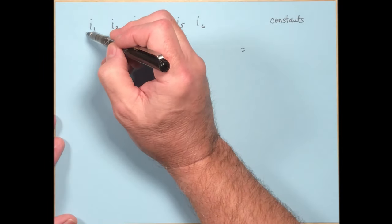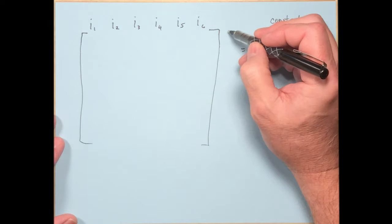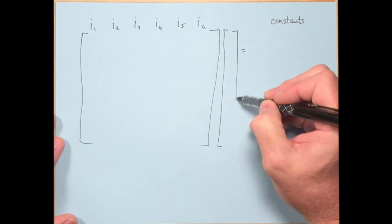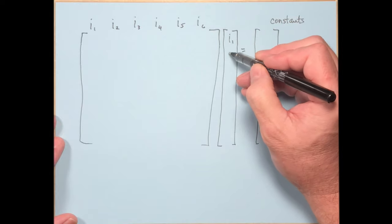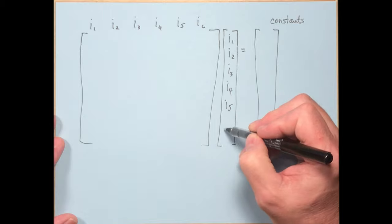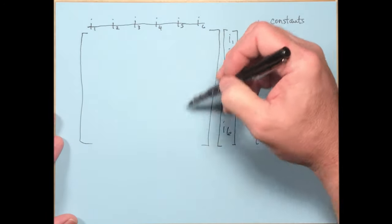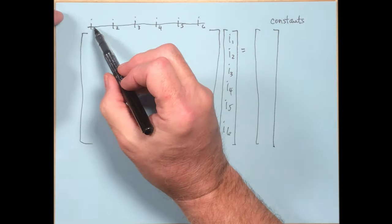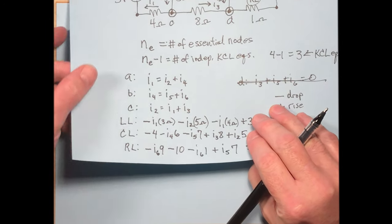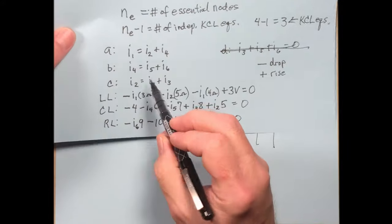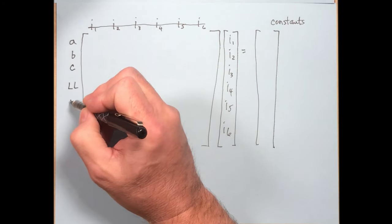What we have is this: a 6×6 coefficient matrix times the variable vector [I1, I2, I3, I4, I5, I6] equals the constants vector. We'll fill in the rows for nodes A, B, C (from KCL) and left loop, center loop, right loop (from KVL).